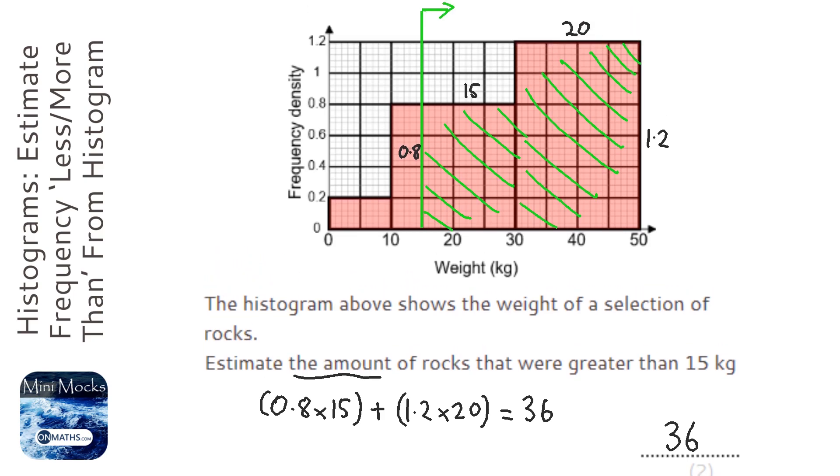It's important here to realize that to get the frequency, you times the frequency density by the class width. Now be careful, because that's not always the way, because sometimes it can be proportional to the frequency. With no other information in this question, we assume that it is equal to the frequency.